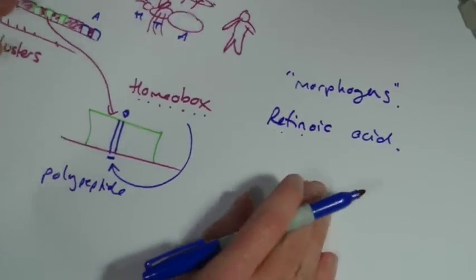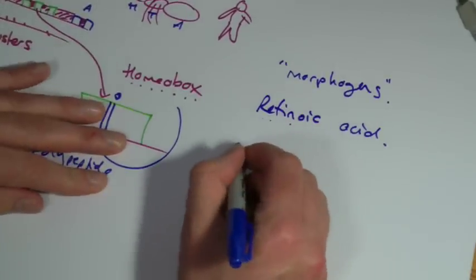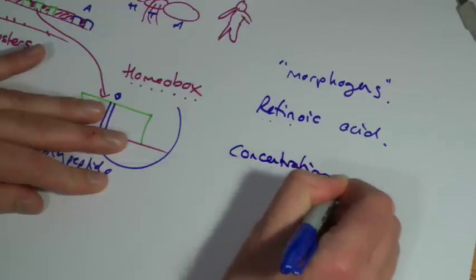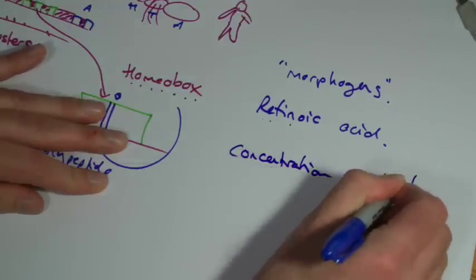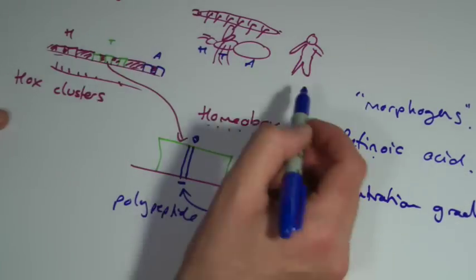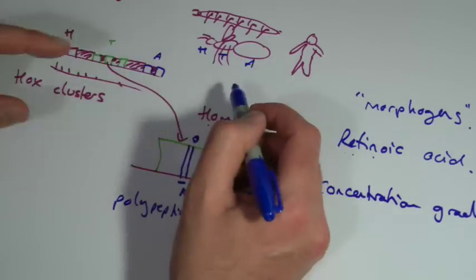And what these things, what morphogens do in the body, they tend to work in concentration gradients. I should say as well, the polypeptides made from these homeobox genes sometimes repress a gene, sometimes they activate it. It depends on what gene it is - they can do two things.